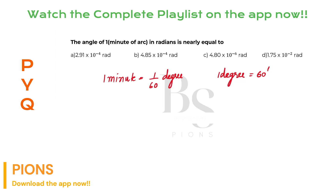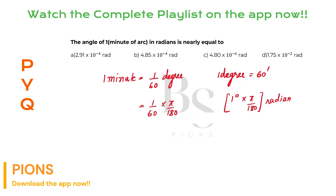1 minute equals 1/60 degree. If you want to convert it into radians, you have to multiply it with π/180. So 1/60 into π/180. Since 1 degree multiplied with π/180 converts the whole thing into radians, 1 degree has π/180 radians. So the 1/60th part of a degree will have π/180 into 1/60. When you solve this, you get approximately 2.91 × 10⁻⁴ radians.